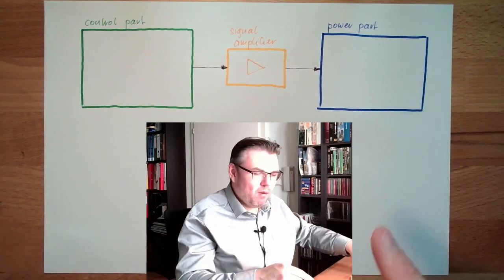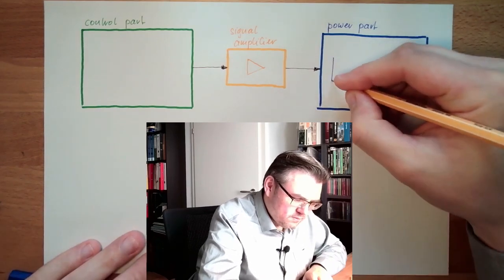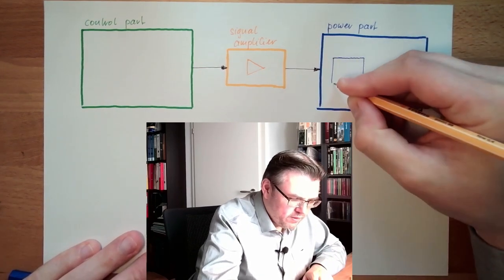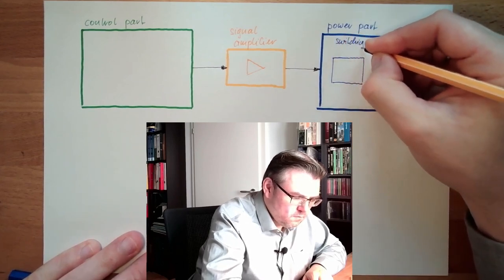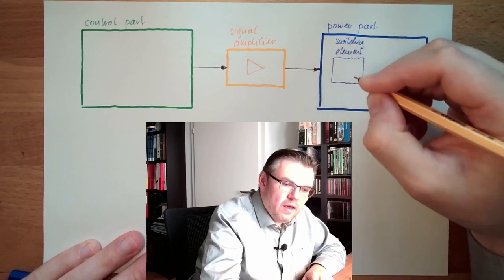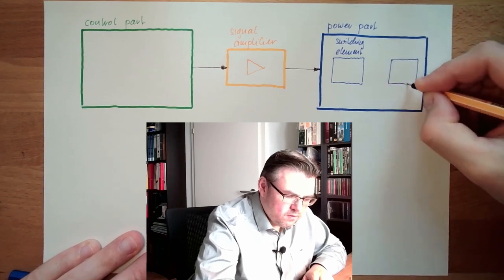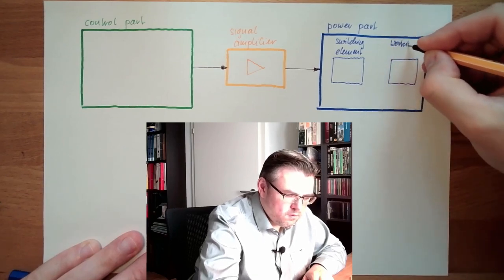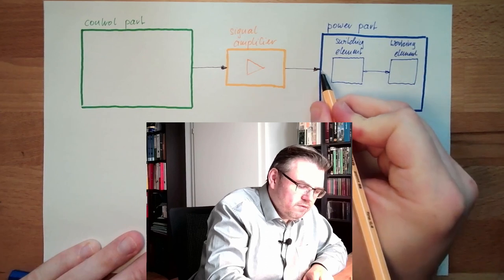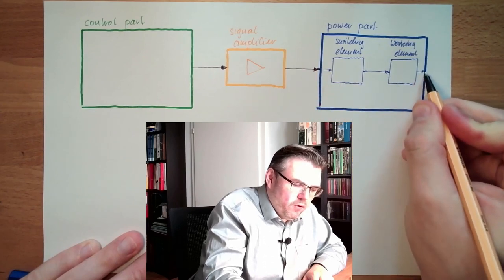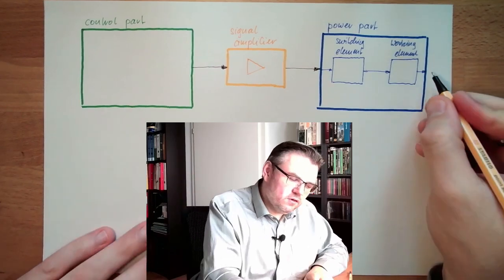What is the power part? The power part can be divided into two sub-elements. There is the switching element, which is switching power on and off, and then there is the working element, which is really doing the work. The switching element is usually valves, and working elements are some sort of pneumatic drives, like pneumatic motors and pneumatic cylinders.